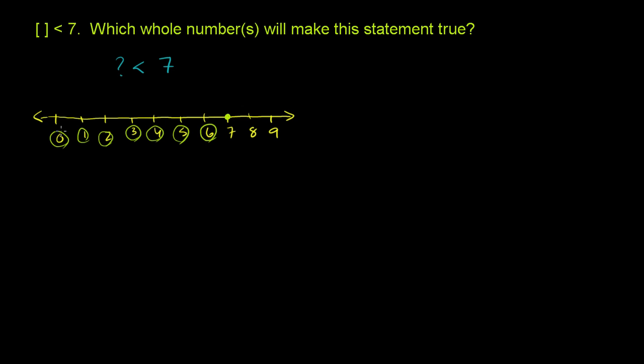So you could put any of these numbers here and the statement would be true. You could write 0 is less than 7 - that's true. You could write 3 is less than 7 - that's true. You could write 6 is less than 7 - and that would be true. You could not write that 8 is less than 7. So 8 would not satisfy this, this is not true. So we cannot write that. 8 is greater than 7.